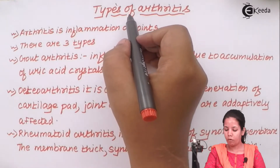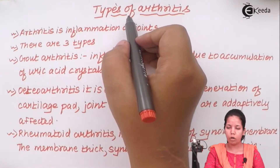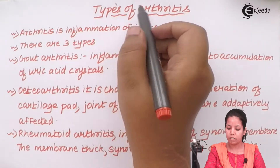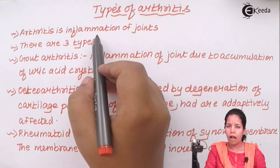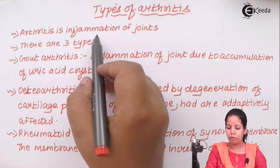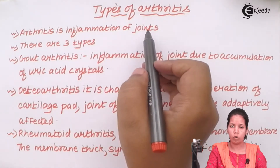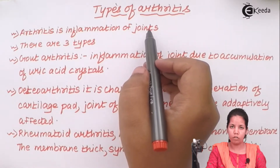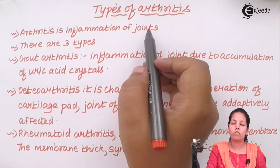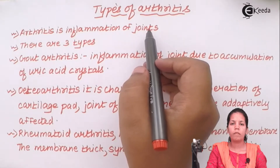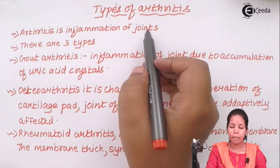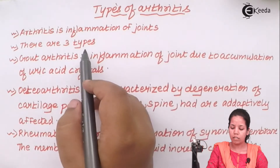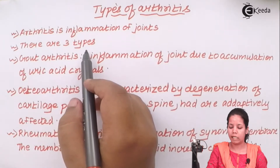Types of Arthritis. Arthritis is basically inflammation of your joints. In arthritis, all joints of your body can be infected — your wrist joints, your elbow joints, your knee joints, your pharyngeal joints — everything can be infected. There are three kinds of arthritis that are predominantly seen.